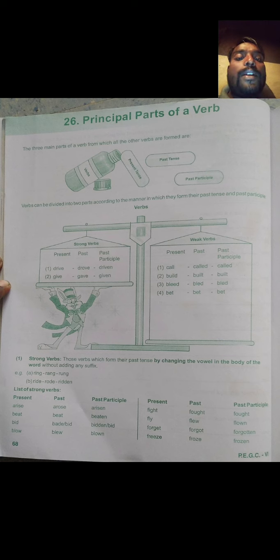Move to the second part of the verb that is weak verbs. In present tense, call, past tense, called, past participle, called. Next one, build, built, built. Third one, bleed, bled, bled. Next one, bet, bet, bet.